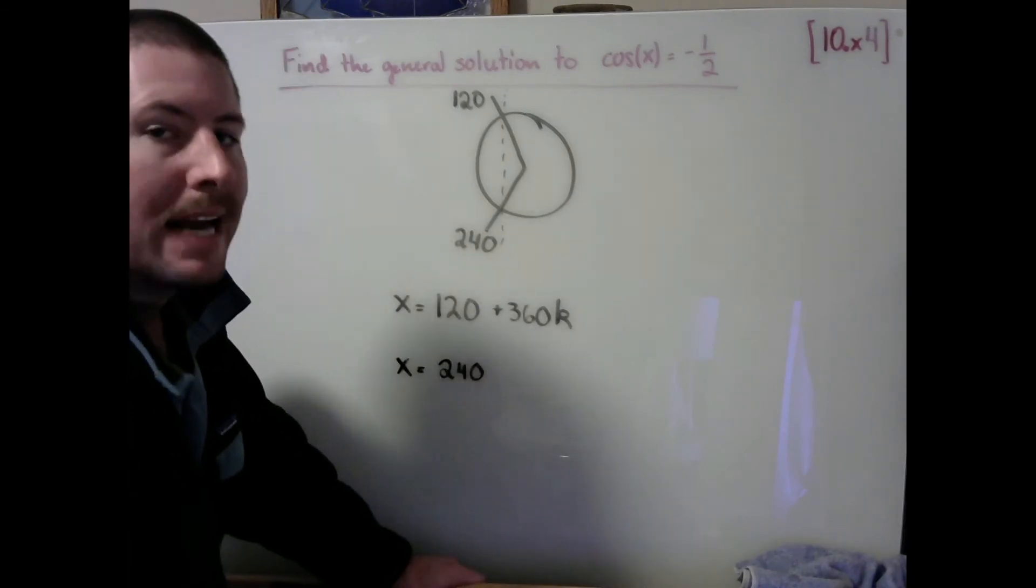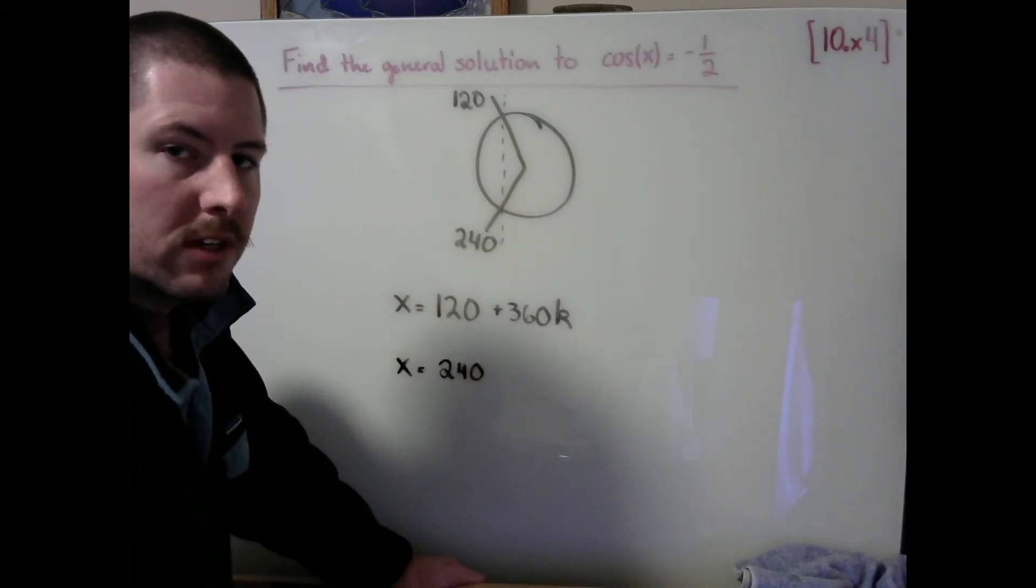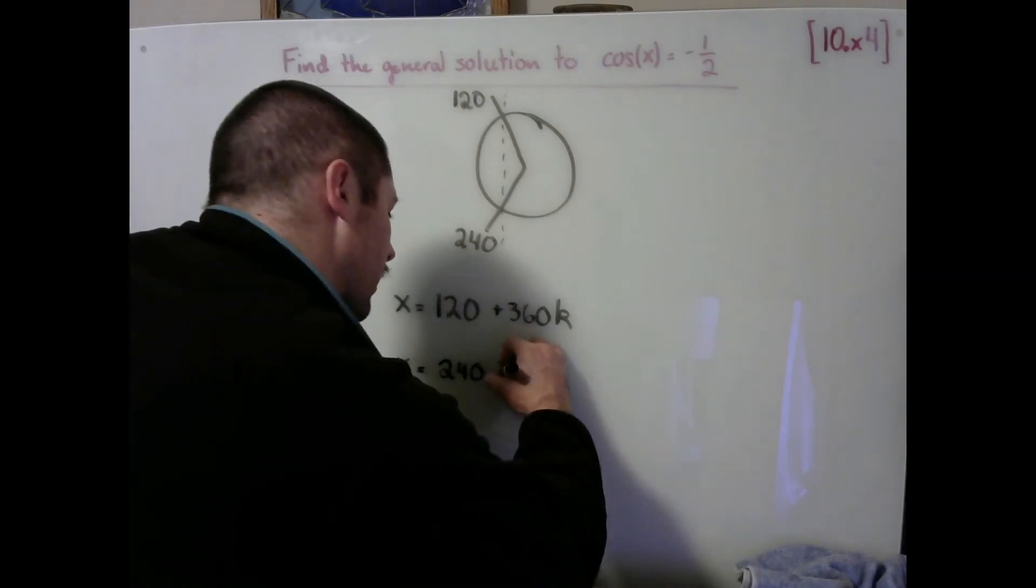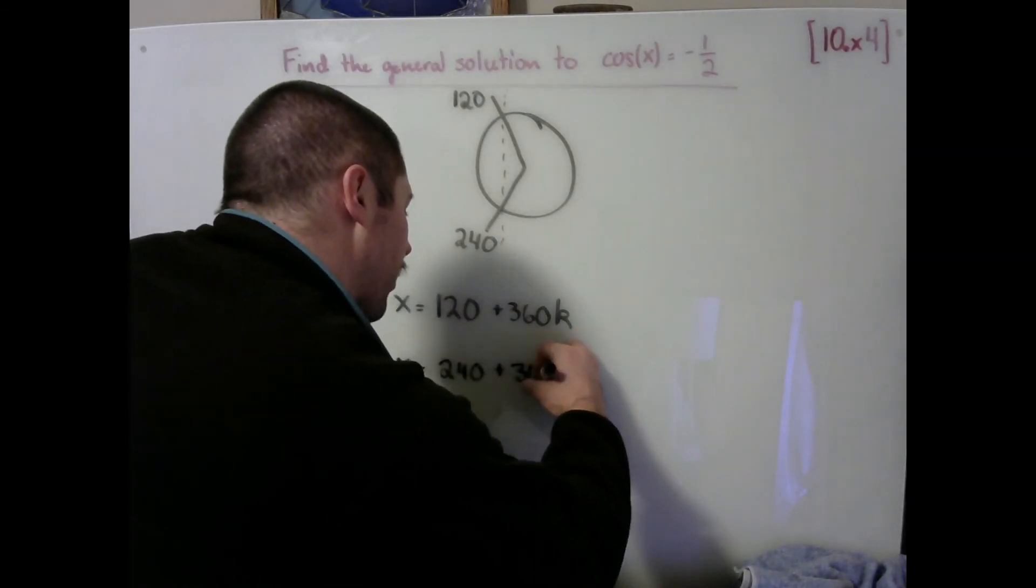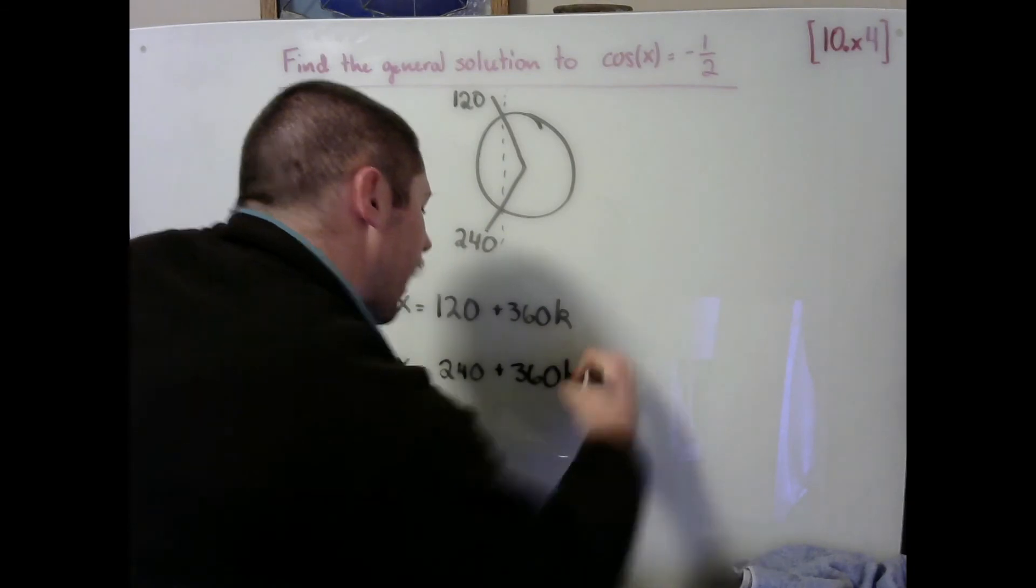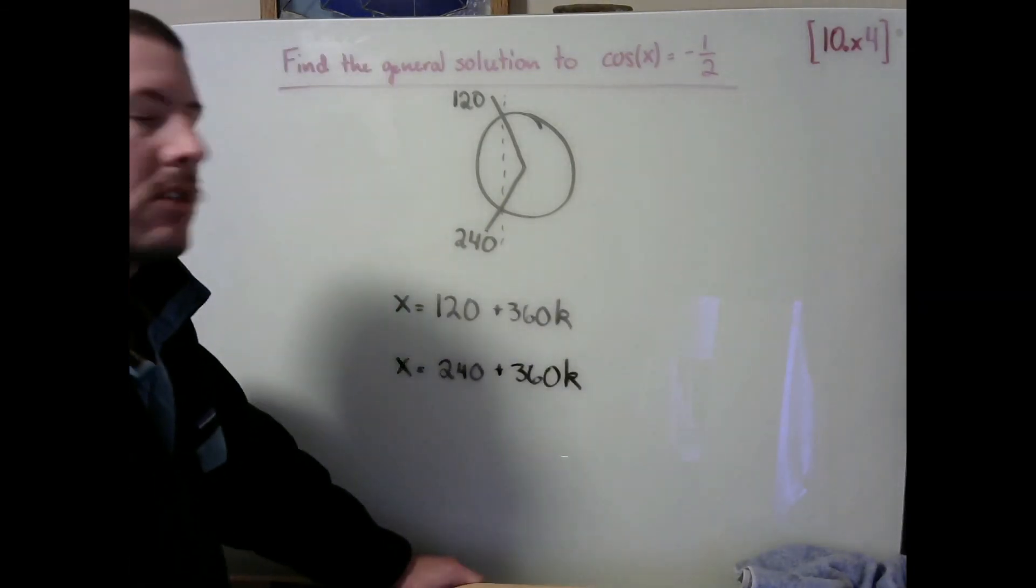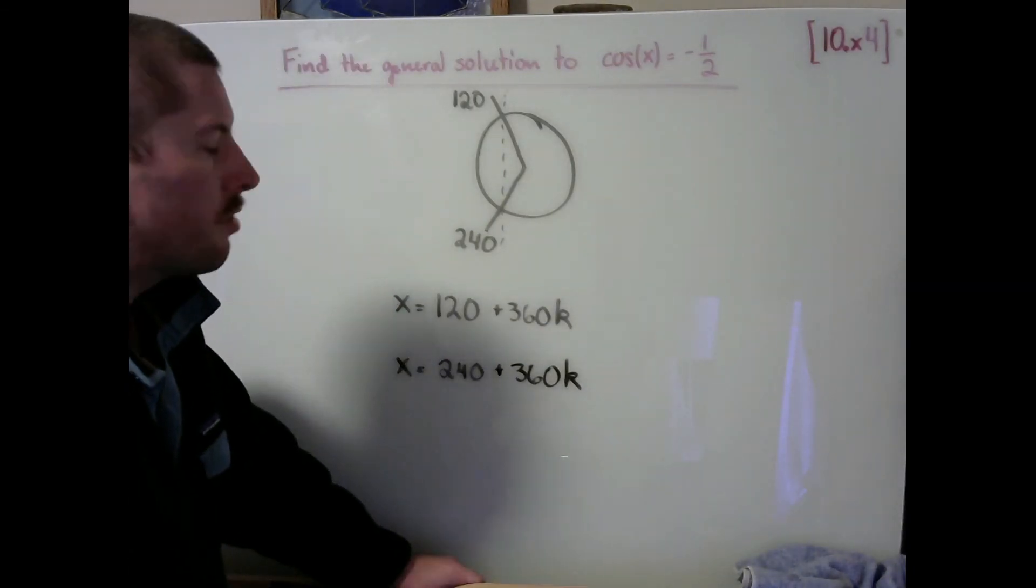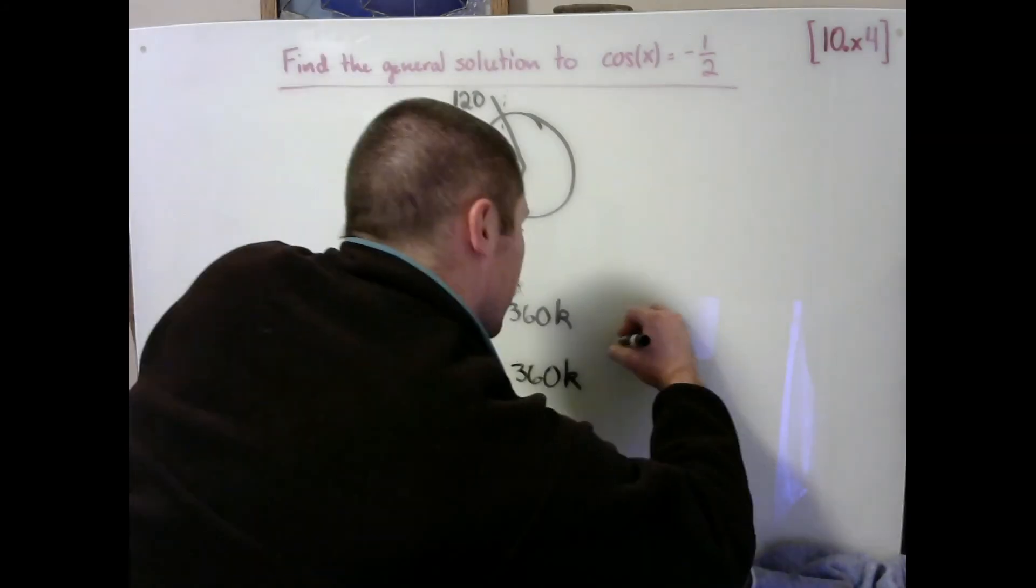I also know that I can get any angle that's coterminal with 240 degrees to also be a solution. And so here it seems like we could also add 360 any number of times. So the final thing that I'd like to say about these two pieces of general solution here is that...